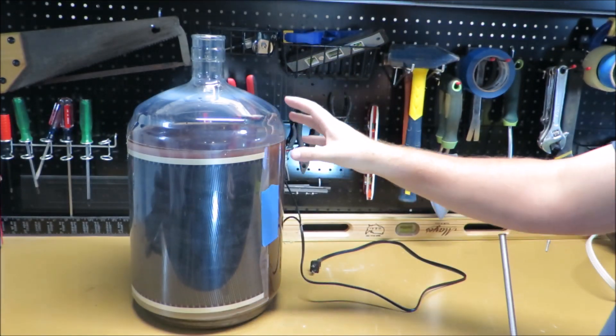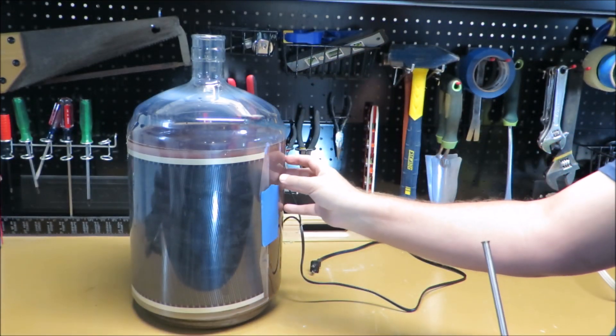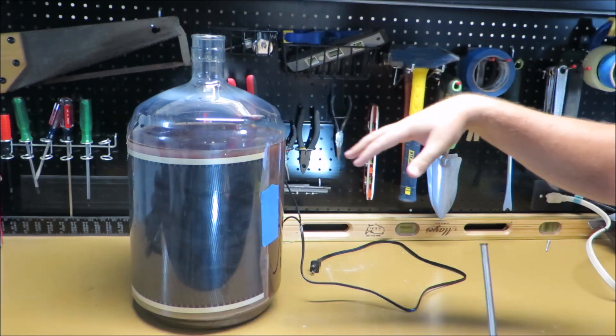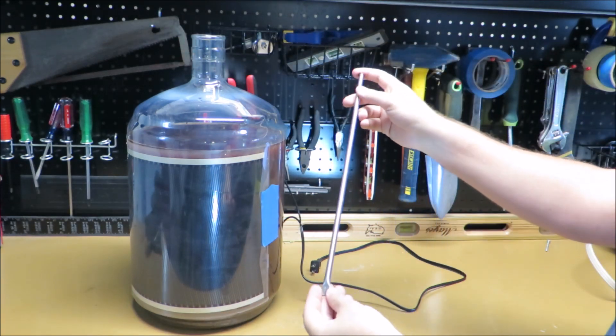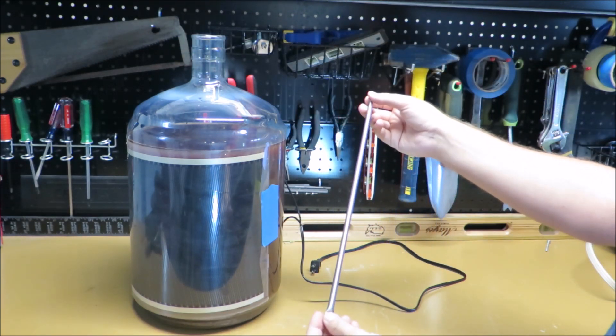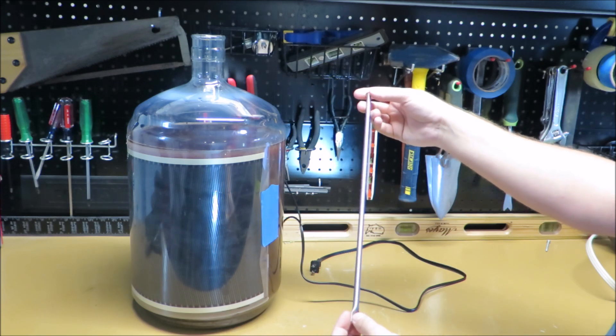So you can get a good idea of what the temperature of the actual liquid is and not the outside air temperature. I went on Amazon and picked up this. This is from the homebrew number seven stopper thermal well.